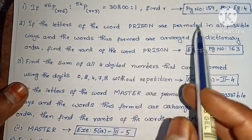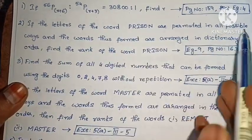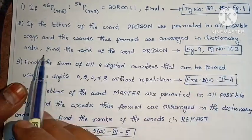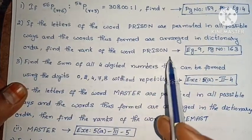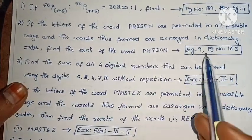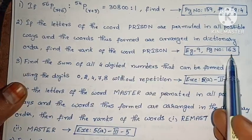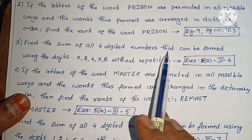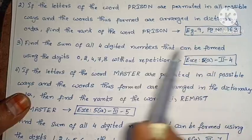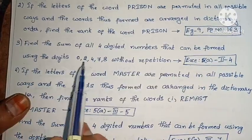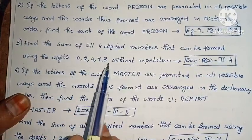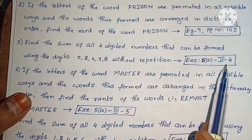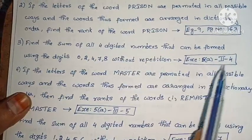Next: if the letters of the word PRISON are permuted in all possible ways and arranged in dictionary order, find the rank of the word PRISON (Example 9, page 163). Next: find the sum of all 4-digit numbers that can be formed using the digits 0, 2, 4, 7, 8 without repetition (Exercise 5, Roman II, fourth one).